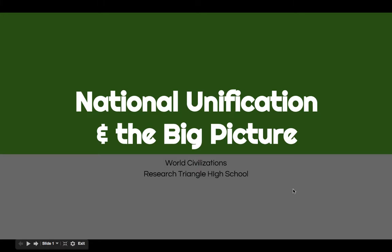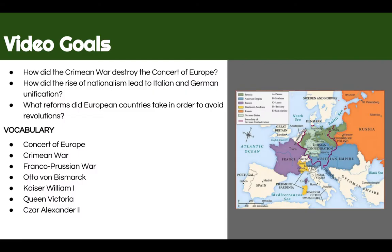Mr. Lasseter here, and in this video we're looking at national unification and the big picture. Basically we'll see the results of nationalism uniting countries like Italy and Germany, and we will see that fragile balance of power become disturbed in this time. We're also going to see some reforms that European countries undertake in order to avoid revolution, as we saw in the early to mid 1800s. Lots of vocabulary here, so let's get started.